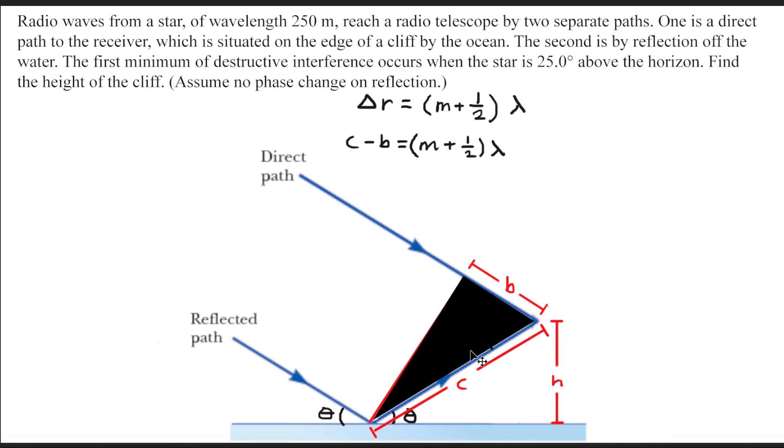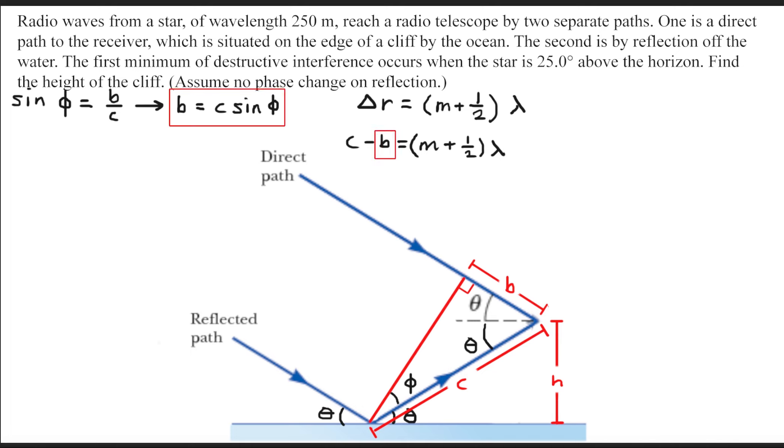Next, focus your attention on this black triangle. We'll use some trigonometry to solve for the sine of phi. We get that sine of phi equals B over C. We can rearrange that expression and solve for B, and we get that B equals C times sine of phi. With that newfound relationship in mind, we can substitute in the B value into this equation, and we get that C minus C times sine of phi equals M plus one-half times lambda.